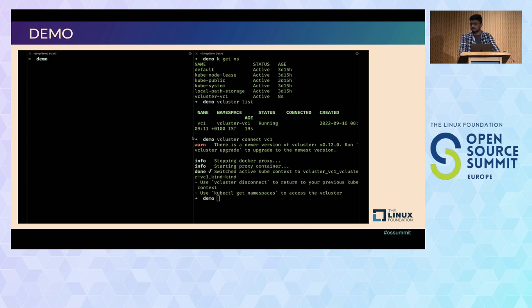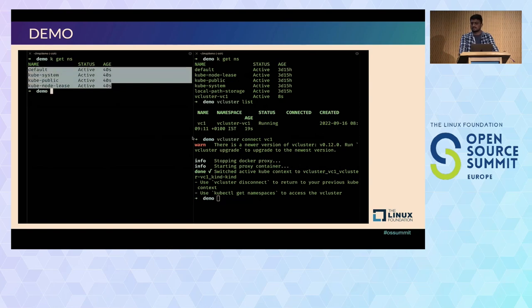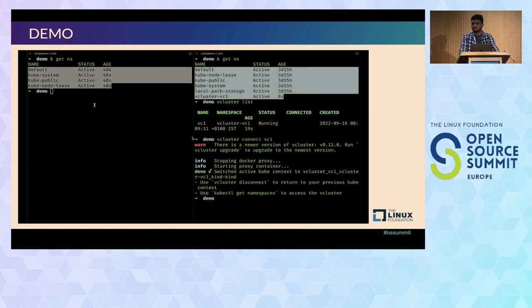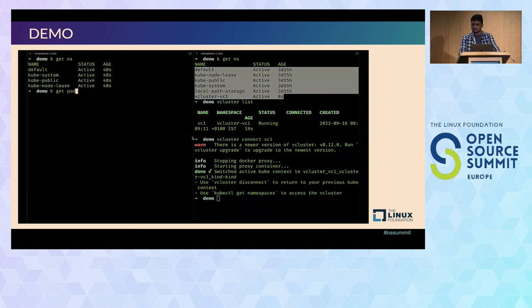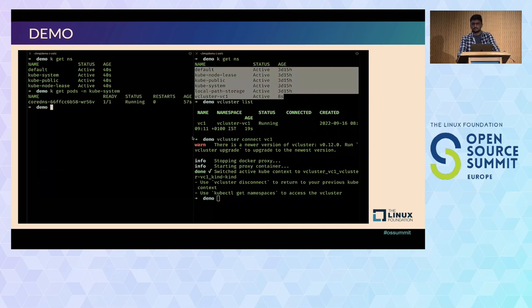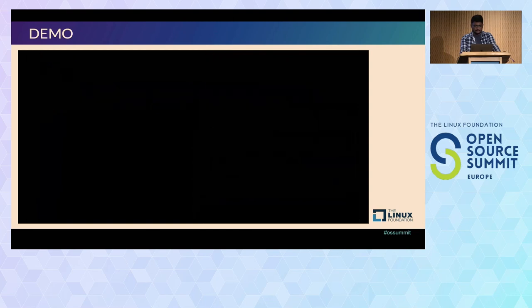So now we'll connect to that vCluster. We can see it's running and we'll use connect command to access the virtual cluster there. It's essentially stopping a docker proxy and starting a new proxy container in the backend. So now when I do kubectl get namespace, then you can see the new namespaces arise there. The age is just 40 seconds which means it has just been created. The namespace on the right hand side and the left hand side are different, so you can essentially see the difference, you are in a separate cluster. When you do kubectl get pods in kube-system, if you are the admin of virtual cluster you can get pod in that namespace.